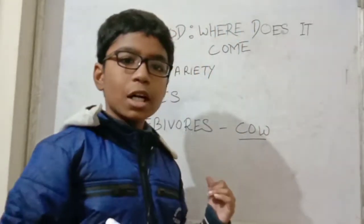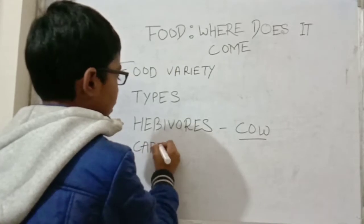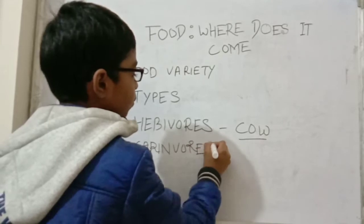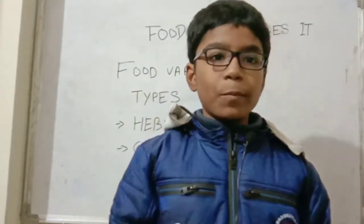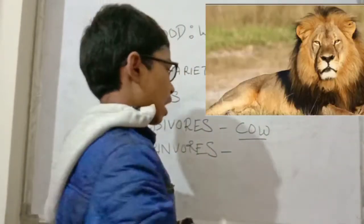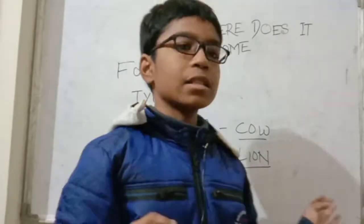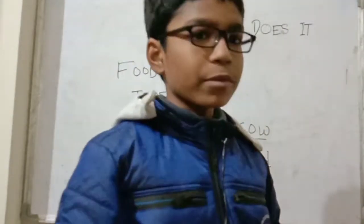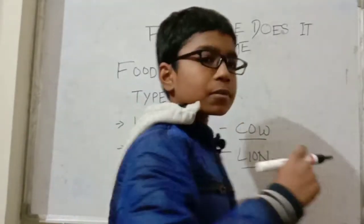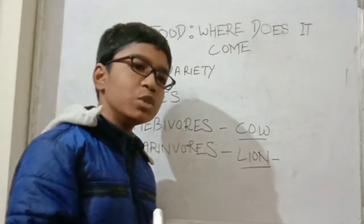Next we have carnivores. Carnivores are animals or living organisms that eat only animal products. For example, the lion — lions eat only the meat of other animals, not grass. Lions have very sharp teeth to tear the meat of other animals. This was the definition of carnivores.